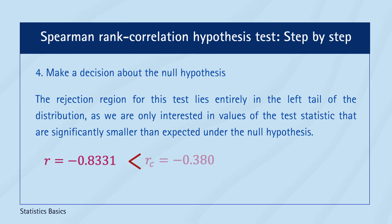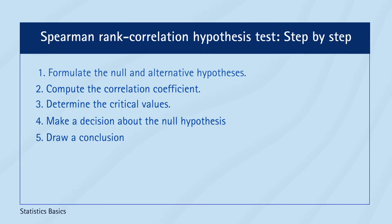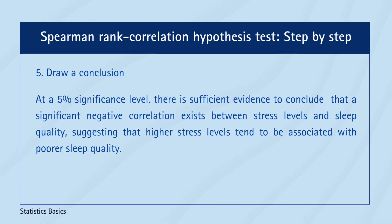Since the calculated Spearman's Rank Correlation falls below the critical value, we reject the null hypothesis at a 5% significance level. A rejection of the null hypothesis suggests a statistically significant negative correlation between stress levels and sleep quality — that is, higher stress levels are associated with poorer sleep quality. By performing Spearman's Rank Correlation Hypothesis test, the psychologist is now able to determine whether the observed association between stress and sleep quality is statistically significant, which can help inform treatment strategies for stress management and improve sleep quality.